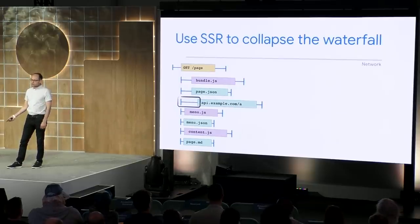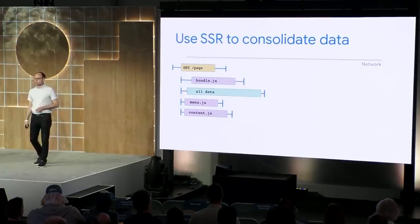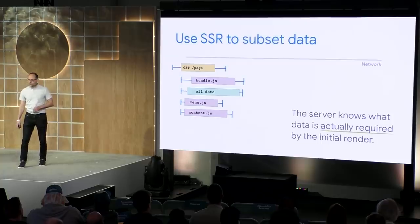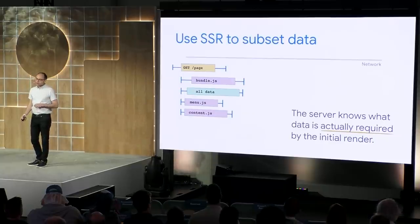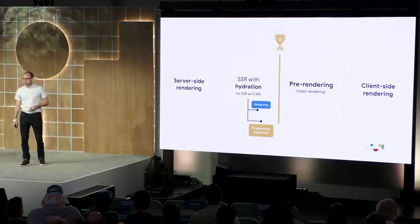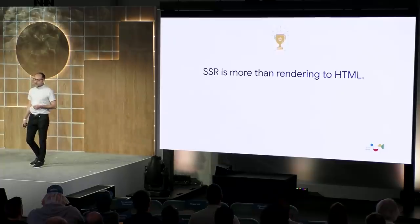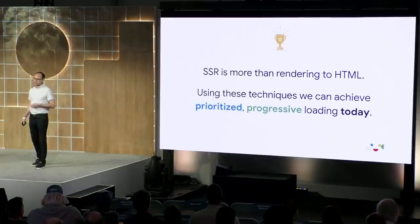If we have a server that knows what data is going to be needed by the client for every page, we can use that to do much more than just preload. In a setup like this, the server can actually do all the data fetching on behalf of the client for our initial request. This means the client doesn't have to wait until components are booted up before fetching their data. But it also unlocks one of the most useful optimizations of all: the server now has an opportunity to reduce the overall amount of data it sends to the client because it knows what pieces are actually necessary for first view. Coming back to our spectrum analogy, we've seen how streaming and progressive hydration can help us move towards the center of the spectrum. The techniques shown today can be combined to create a prioritized, progressive loading story for your application.